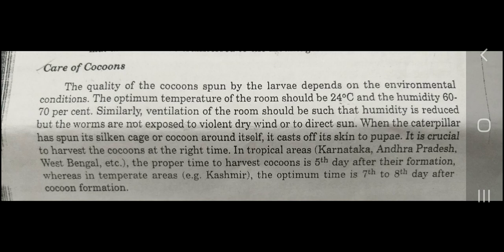It is crucial to harvest the cocoon at the right time. In tropical areas like Karnataka, Andhra Pradesh, and West Bengal, the right time to harvest is the fifth day after cocoon formation. In temperate areas like Kashmir, where temperature is low, we can harvest 7 to 8 days later.